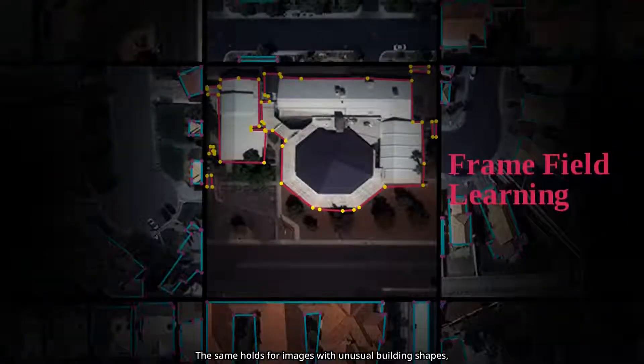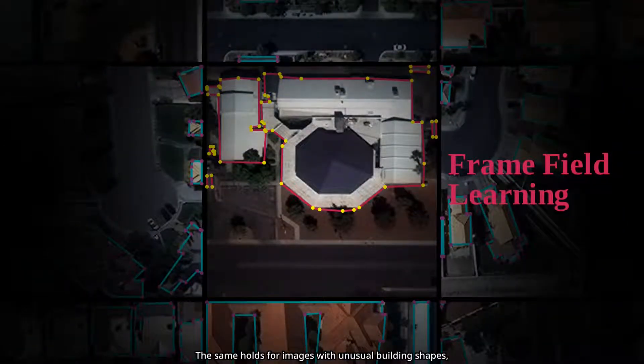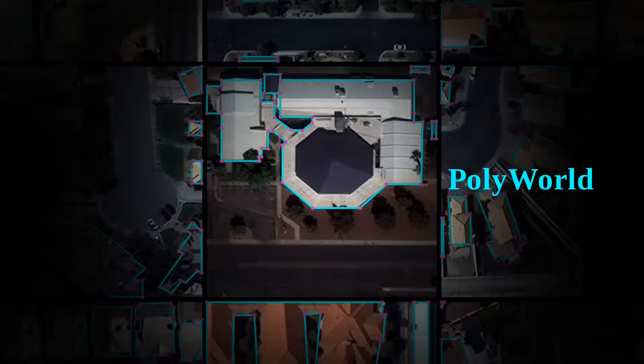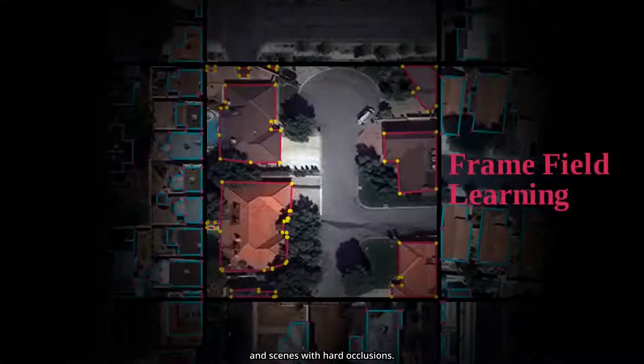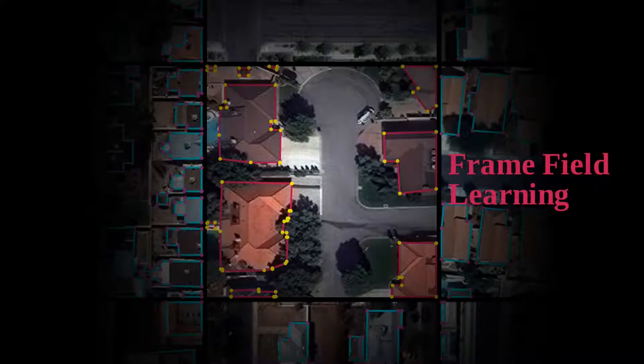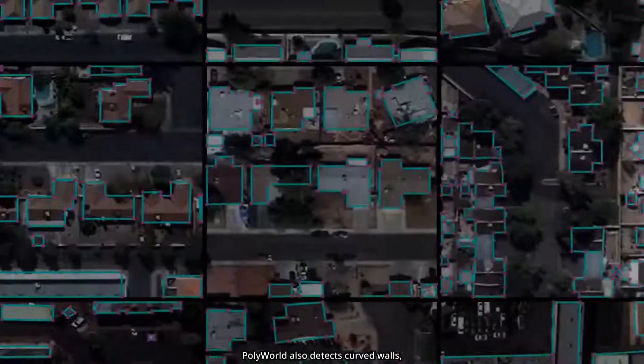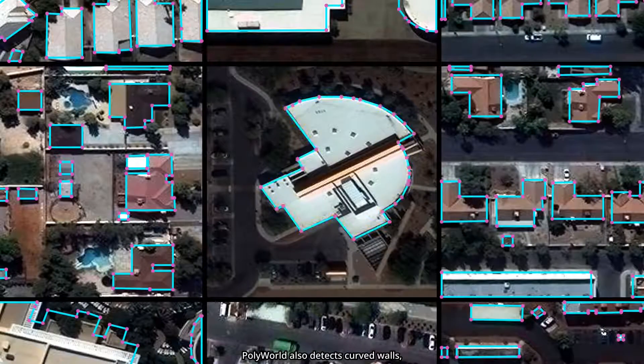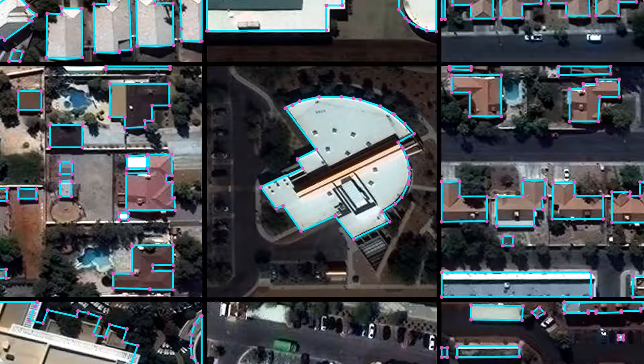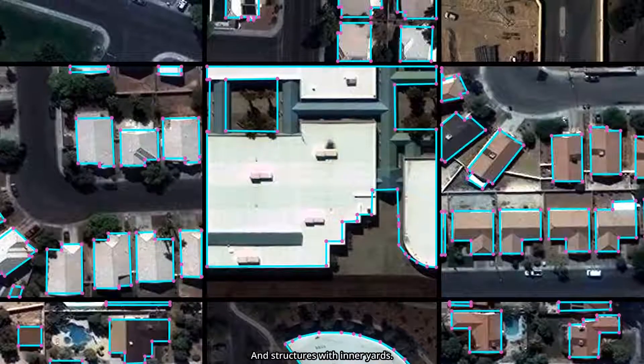The same holds for images with unusual building shapes and scenes with hard occlusions. PolyWorld also detects curved walls and structures with inner yards.